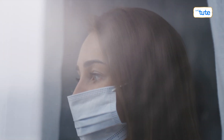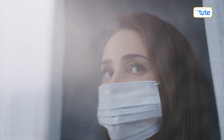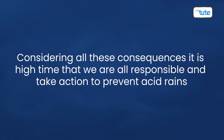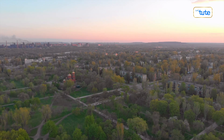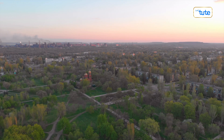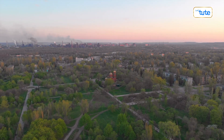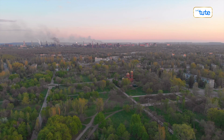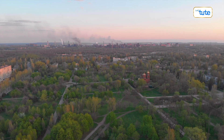Considering all these consequences, it is high time that we all take responsibility and act to prevent acid rain. This would require reducing emissions of sulfur dioxide and nitrogen oxides by adopting cleaner energy sources and implementing stringent air pollution control measures. Additionally, promoting sustainable practices and raising awareness about the importance of reducing pollution can contribute to preventing acid rain.